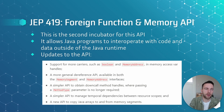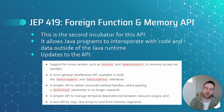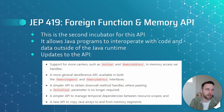Then JEP 419: the Foreign Function and Memory API. This one might look familiar — that's because it's the second incubator for this API; the first one was last release. This API allows Java programs to interoperate with code and data outside of the Java runtime. It's a modern alternative to the JNI, the Java Native Interface, and in this new JEP there are a couple of updates to this API listed on the slide here.